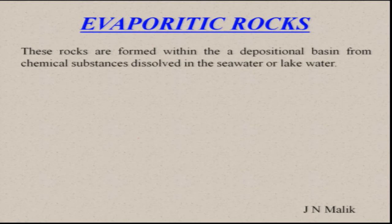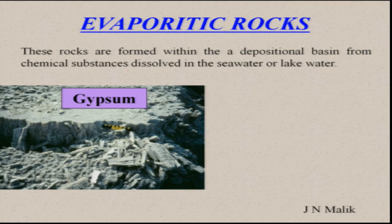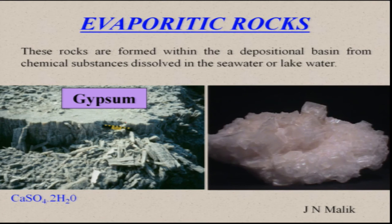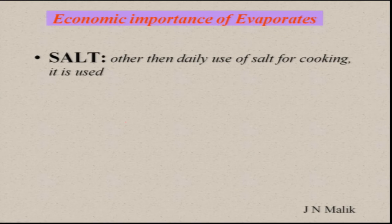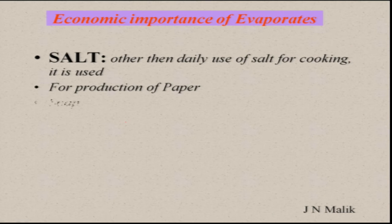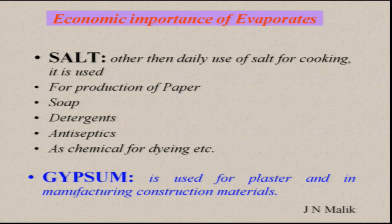Evaporitic rocks are formed within depositional basins from chemical substances dissolved in sea water or lake water. They are mostly seen in arid or semi-arid regions, and include gypsum and halite. Their economic importance includes everyday cooking salt, production of paper, soap, detergents, antiseptics, and use as chemicals in dyeing industries. Gypsum particularly is used for plaster and in manufacturing construction materials.